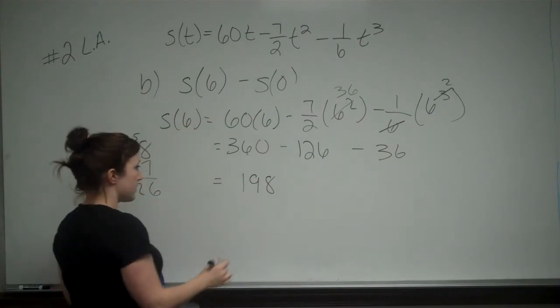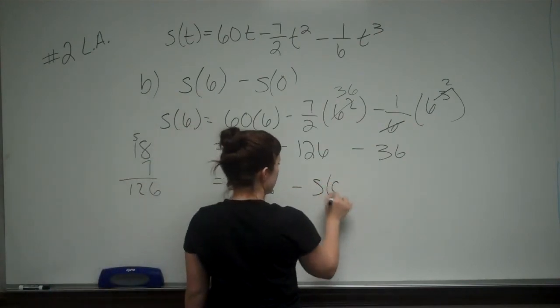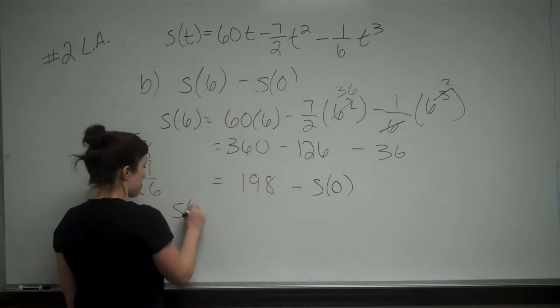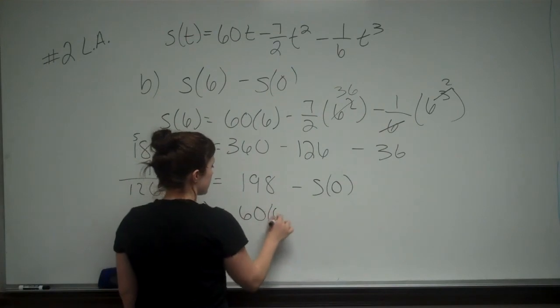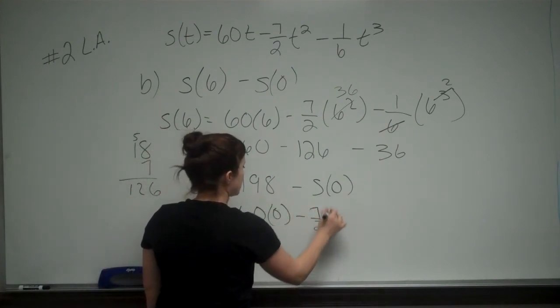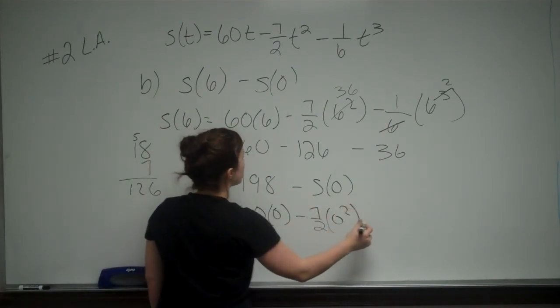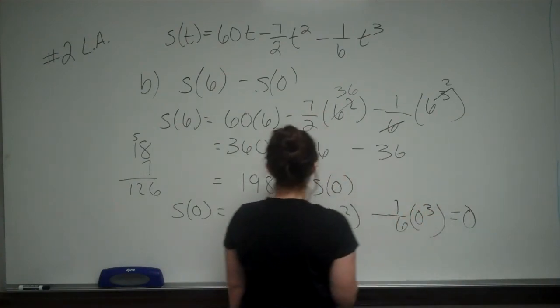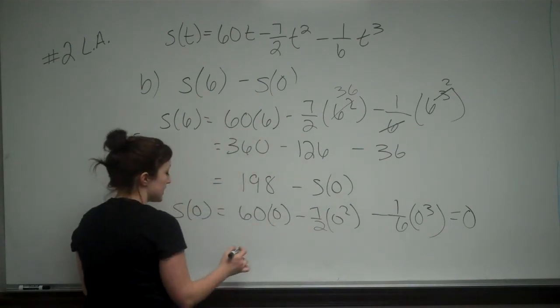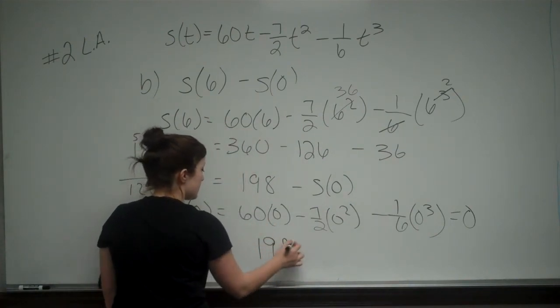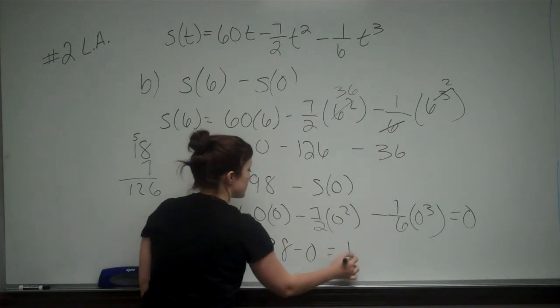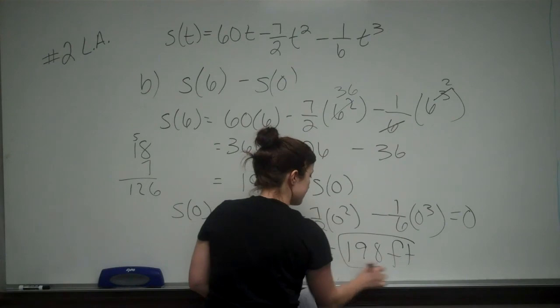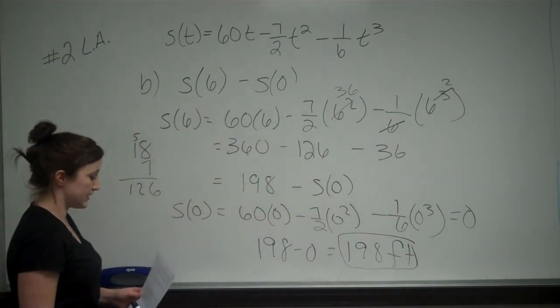And now I need to find that minus S of 0. So S of 0 is just going to be 0 plugged in. So that's 60 times 0 minus 7 halves times 0 squared minus 1 sixth times 0 cubed. So this is just equal to 0. So our total distance is 198 minus 0, so it's just equal to 198 feet. That is your answer for part C.